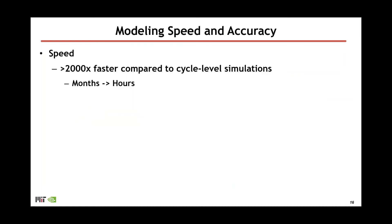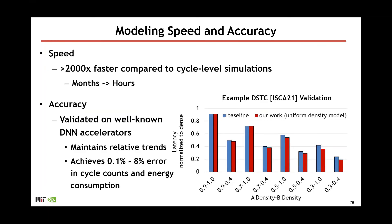With an understanding of SparseSoup, let's look at its high-level modeling speed and accuracy. Compared to cycle-level simulations, SparseSoup is more than 2000x faster — meaning evaluations that used to take months now take only hours. In terms of accuracy, we show an example validation on a DNN accelerator architecture. The y-axis is processing latency and the x-axis shows different scenarios with operands A and B having different density degrees. The blue bars are the baseline and the red bars are our estimation. SparseSoup tracks relative trends and maintains fairly accurate absolute estimations, achieving 0.1% to 8% error in cycle count and energy consumption across a set of well-known DNN accelerators.